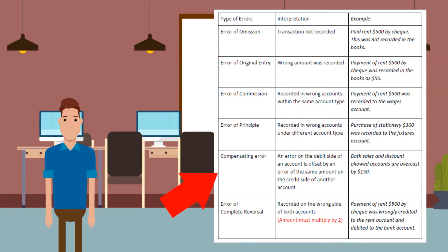Next, compensating error. This is when an error on the debit side of an account is offset by an error of the same amount on the credit side of another account. An example would be: both sales and discount allowed accounts are overcast by $150. Finally, error of complete reversal. This is when an amount is recorded on the wrong side of both accounts — the amount will be multiplied by 2. An example would be: payment of rent $500 by check was wrongly credited to the rent account and debited to the bank account.